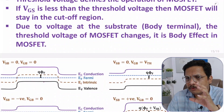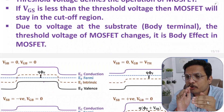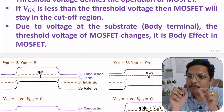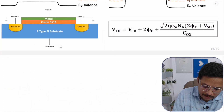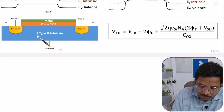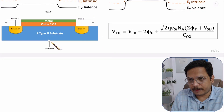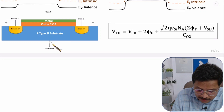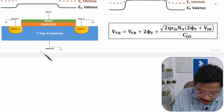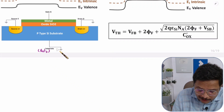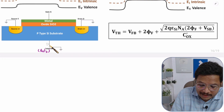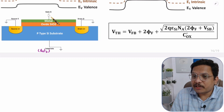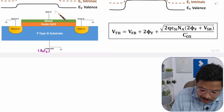Now I'll explain what happens due to body effect. The body is the substrate. If you observe the structure of a MOSFET, the p-type substrate is the body of the MOSFET. This substrate terminal is also known as the body terminal.